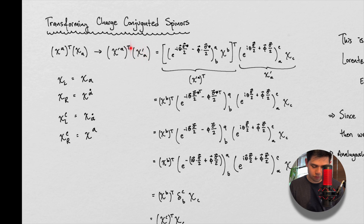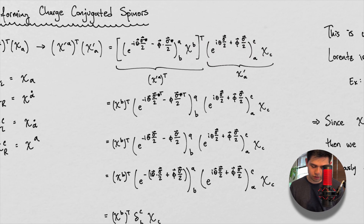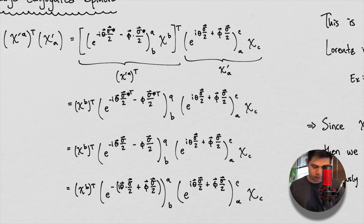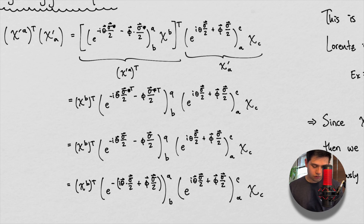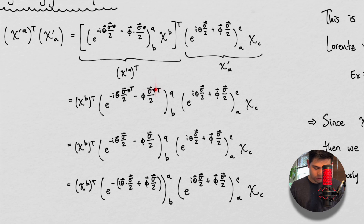So we're taking this spinor here and this spinor here, and what we're going to do is transform them. Transformations — again — are boosts and rotations, which show up as these two expressions. The transformation applies to this object. Now this is a transpose — we transpose this expression. The matrix nature of this comes from the Pauli matrices, so those are the things we're transposing. And then this part stays the same.